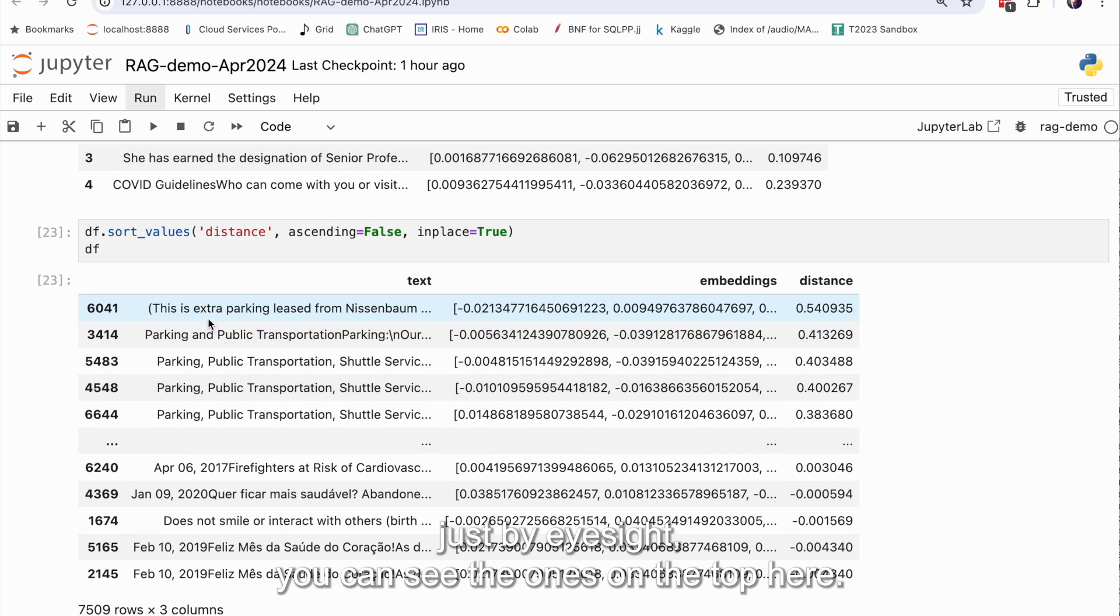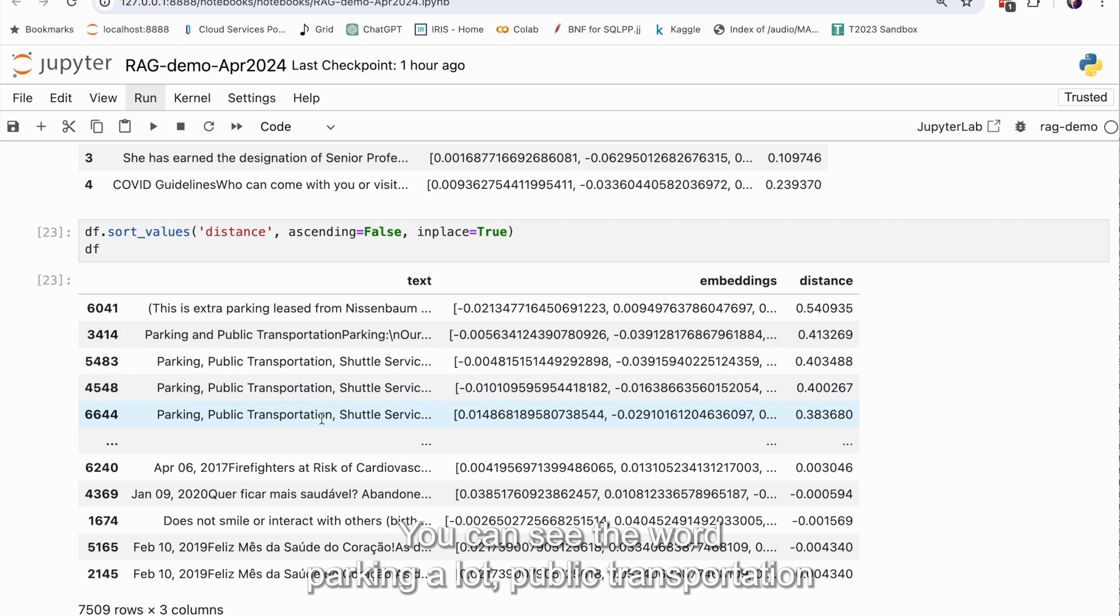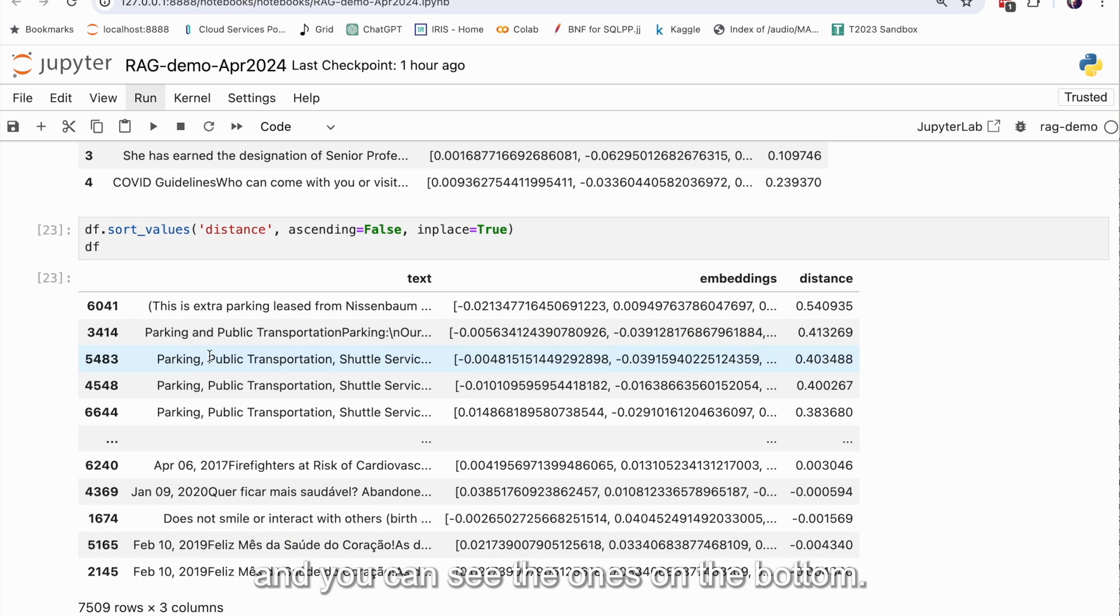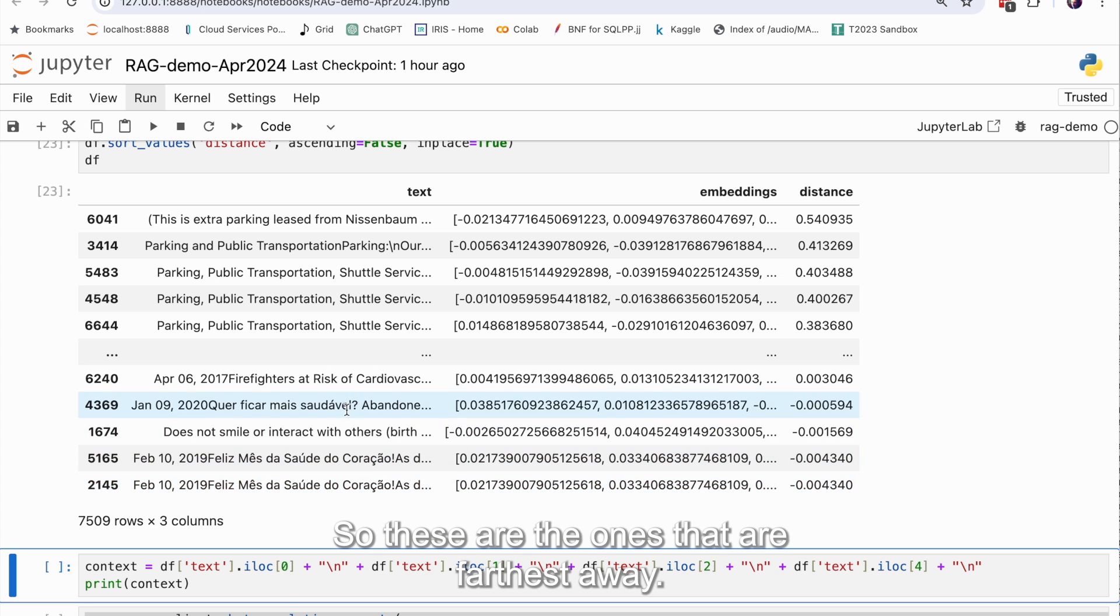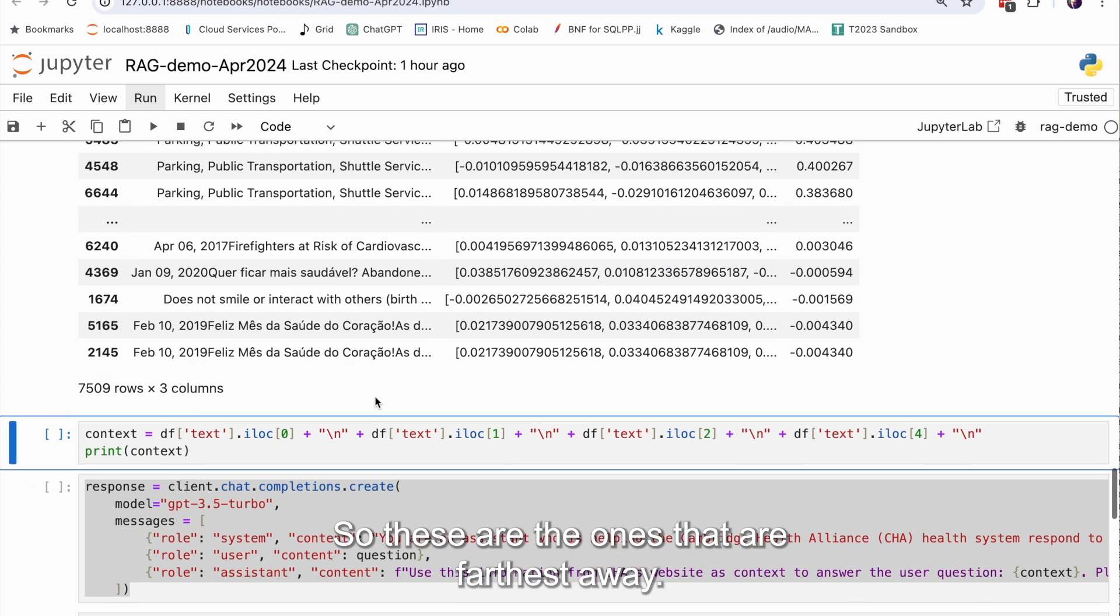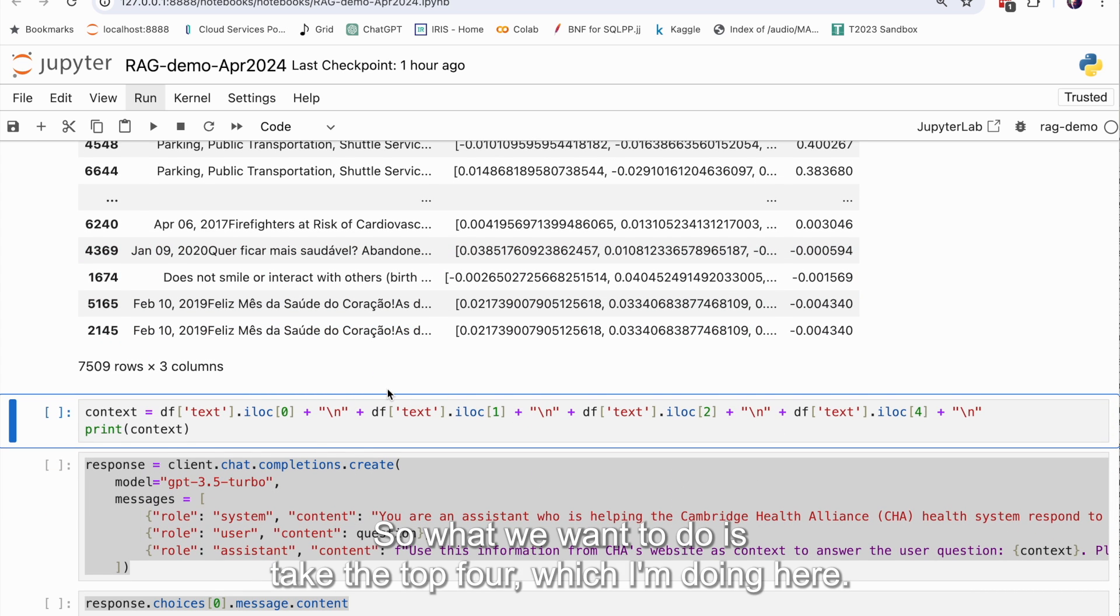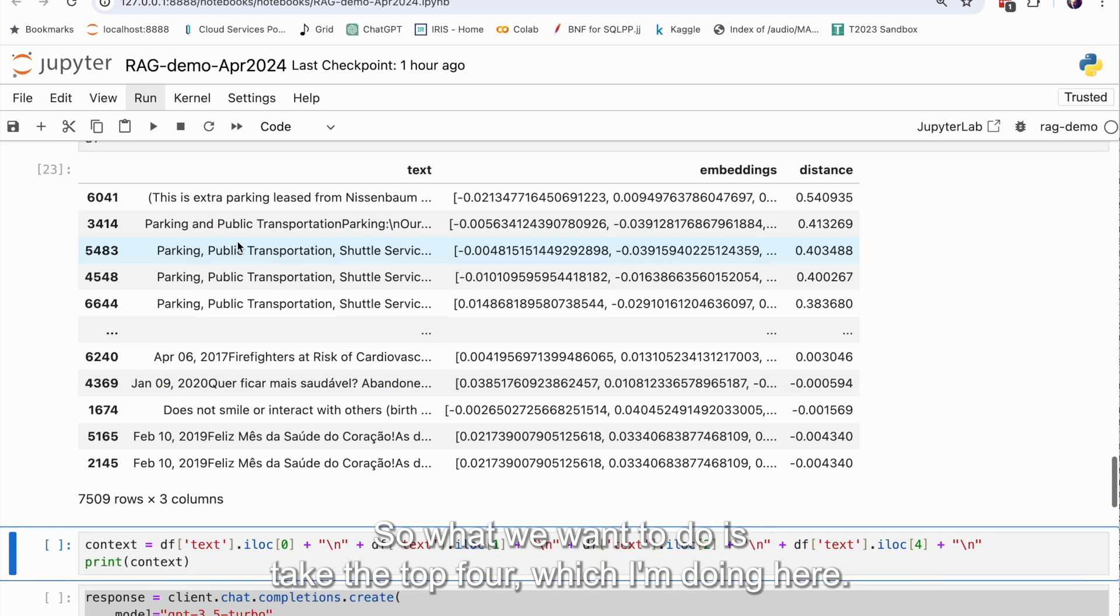So you can see here, just by eyesight, you can see that ones on the top here, I've sorted this, you can see the word parking a lot, public transportation, stuff like that. And you can see the ones on the bottom, that's the way this display works, are not about parking or not in English. A few of those, you can see. So these are the ones that are farthest away.